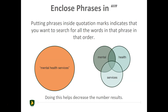Put multi-word phrases in quotation marks. Doing this shows that you want to search for all the words in that particular phrase in the order in which they appear. For example, searching for "mental health services" will return results with those exact words instead of results that may be missing one or more of the words in the phrase.